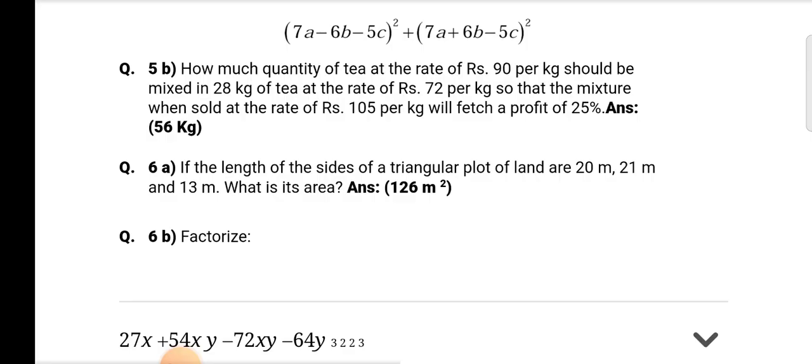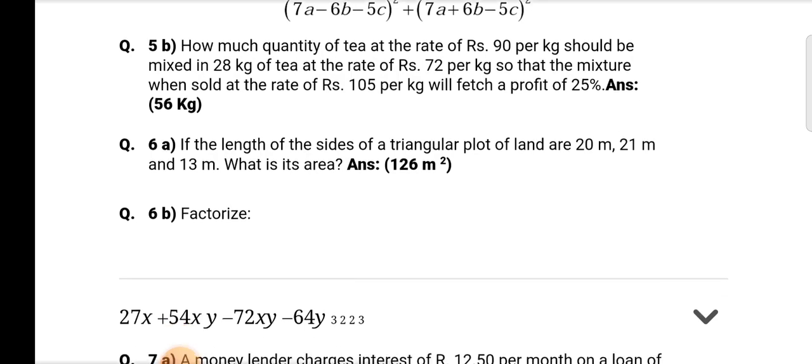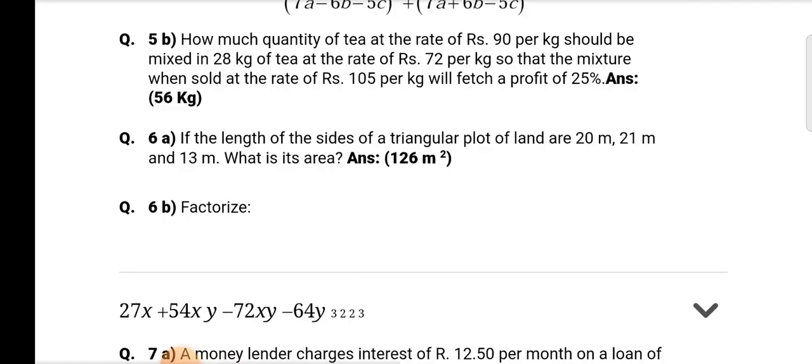Question number 6a: If the length of the sides of a triangular plot of land are 20 meter, 21 meter, and 13 meter, what is its area? Answer is 126 meter square.